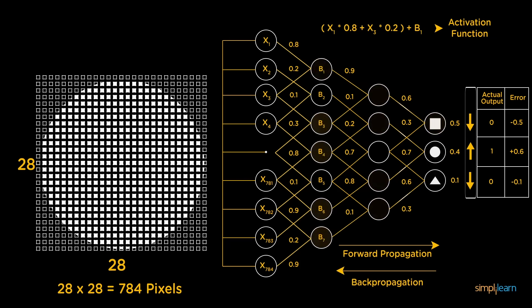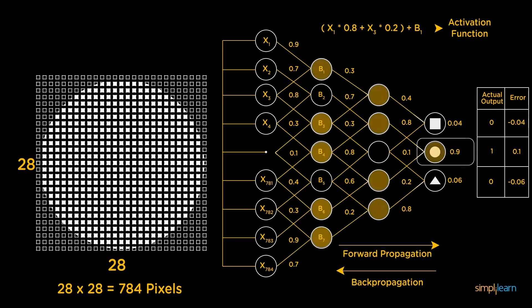Now, based on this information, the weights are adjusted. This cycle of forward propagation and back propagation is iteratively performed with multiple inputs. This process continues until our weights are assigned such that the network can predict the shapes correctly in most of the cases. This brings our training process to an end.